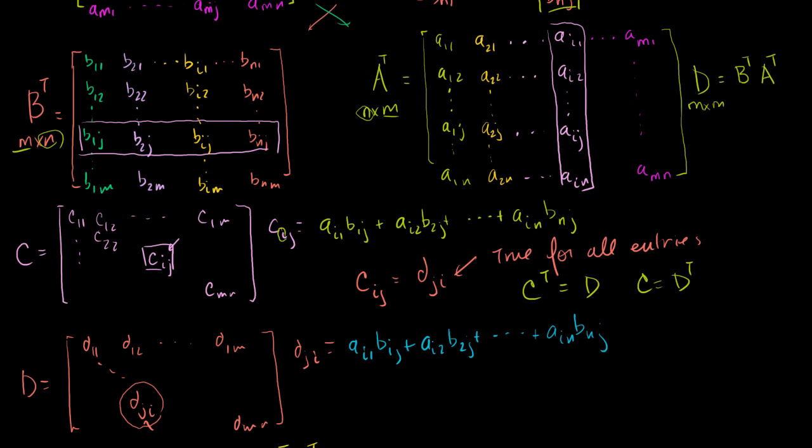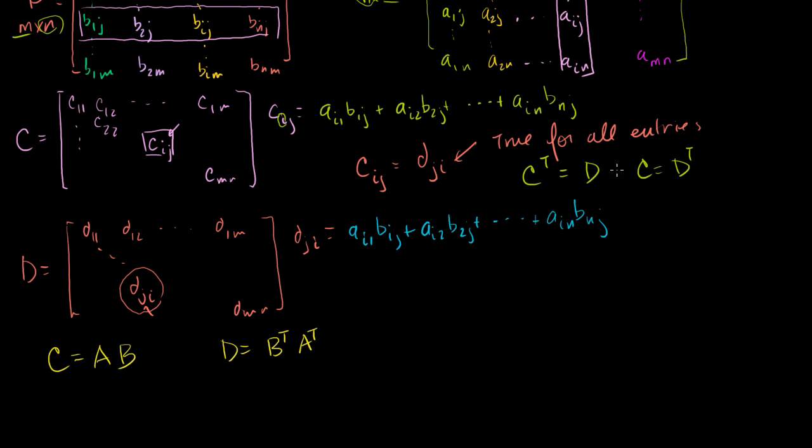Here are the definitions. Now we just found out that d is equal to the transpose of c. So we could write that c transpose, which is the same thing as A times B transpose, is equal to d. So it is equal to d, which is just B transpose A transpose. And this is a pretty neat takeaway.